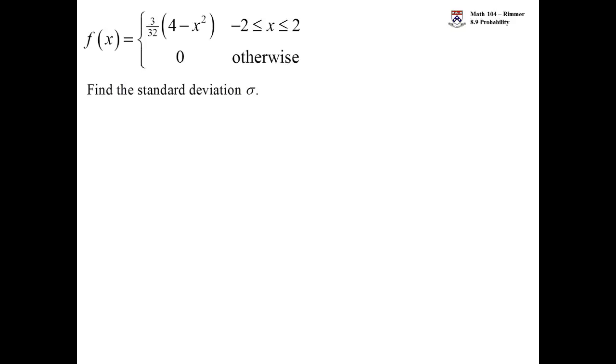Okay, we have this probability density function: 3/32 times the quantity 4 minus x squared, as long as you're between -2 and 2. If you're not told, assume that what you have is a probability density function. And what we're asked to do here is find the standard deviation.